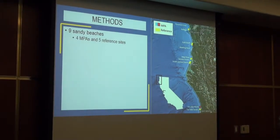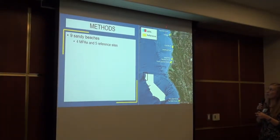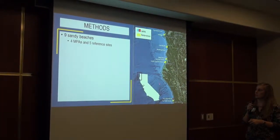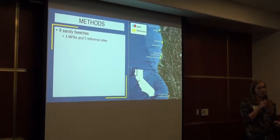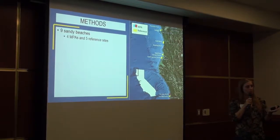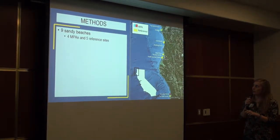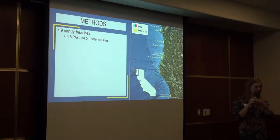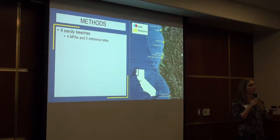For methods, we overall had nine sandy beaches that we sampled, ranging from the California-Oregon border down to Mendocino. Four of these sites were marine protected areas and the remaining five were reference sites, with one reference site associated with each MPA. Except at Samoa Dunes, near Eureka, we added a second reference site because it's close to Humboldt State University and we were able to sample there more often.